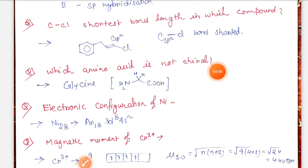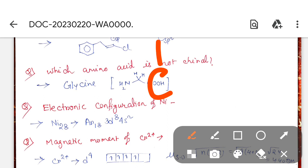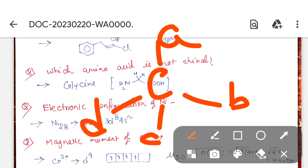As carbon is sp2 hybridized, it is more electronegative, so the CCl bond is shortest. Next, which amino acid is not chiral? That is glycine. When we call a carbon chiral, all four groups connected to the carbon must be different types.